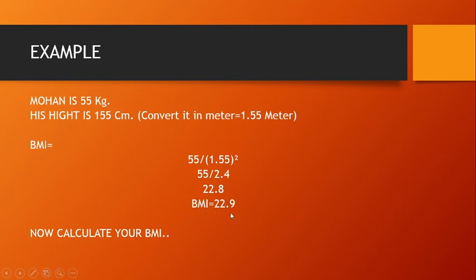एक बार फिर देखें: Mohan का weight 55 kg, height 155 cm, जिसे convert किया 1.55 meter में। Formula है: weight of a person divided by square of his height in meters। 55 ÷ 2.4 = 22.8। BMI is 22.8। इस simple method से हम अपना BMI खुद भी calculate कर सकते हैं।